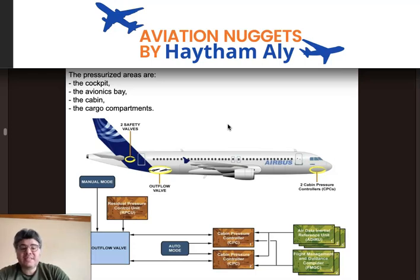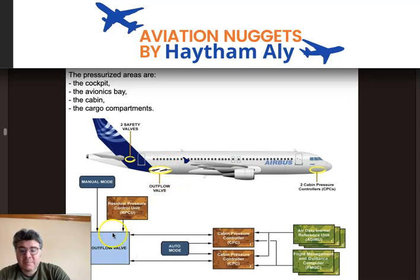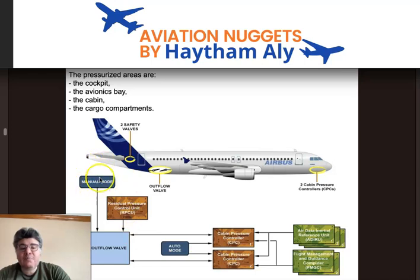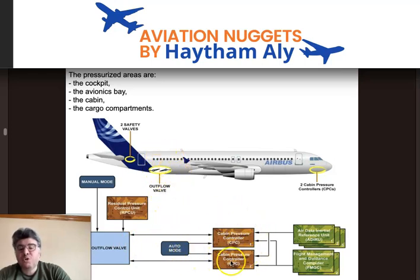The main component of the pressurization system is the outflow valve — one outflow valve. This valve may be operated automatically by the cabin pressure controllers or manually from the pressurization panel. It has three motors: two automatic motors controlled by two cabin pressure controllers, and one manual motor controlled from the pressurization panel.